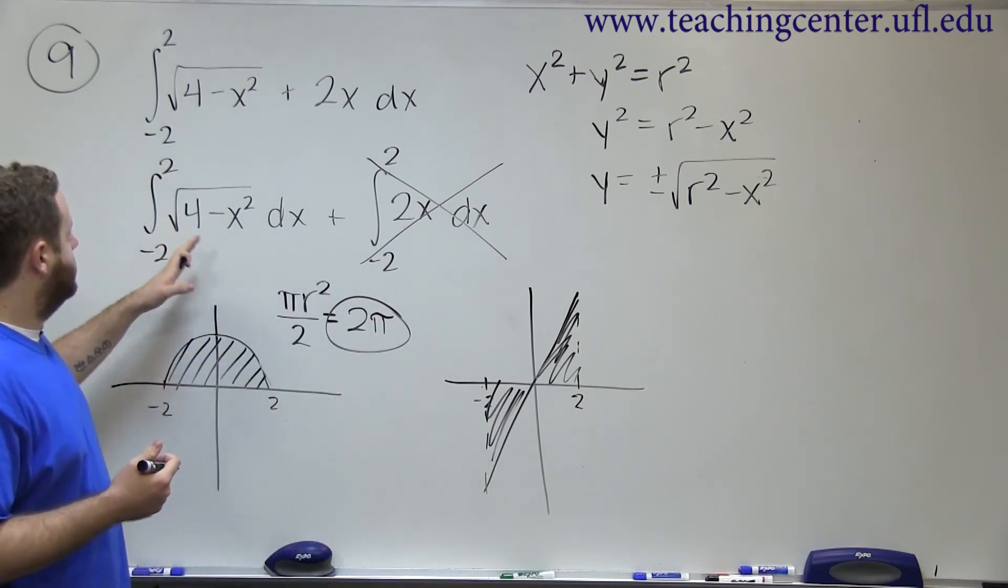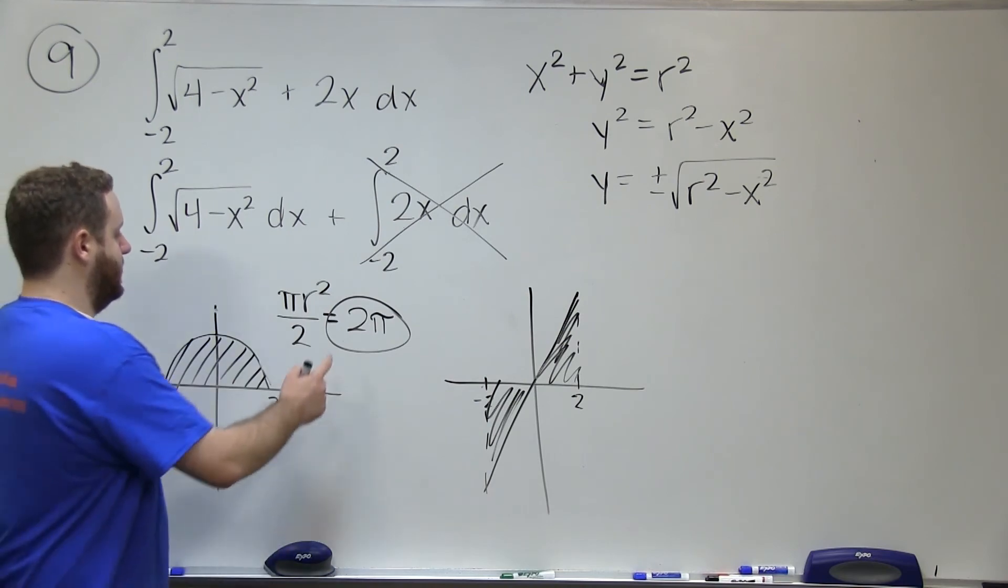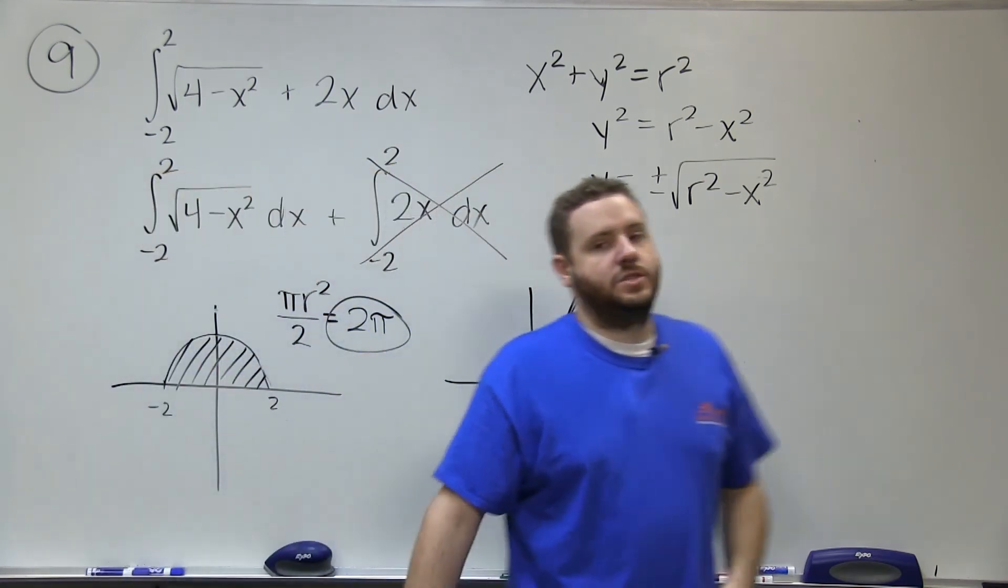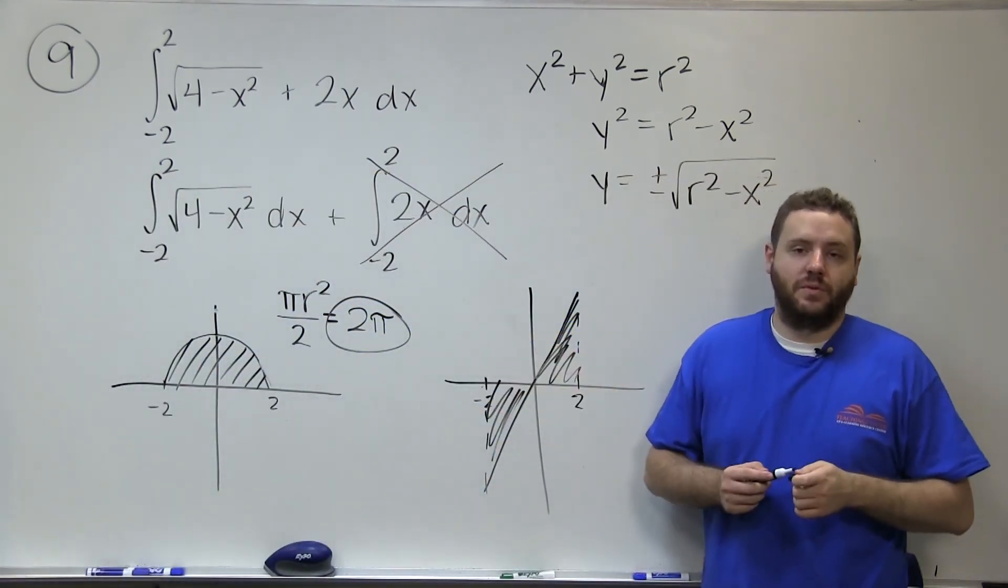So that part's 0, so we get 2 pi plus 0, which means that our total area then is just the 2 pi from the first part.